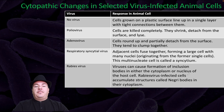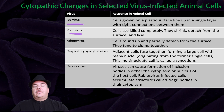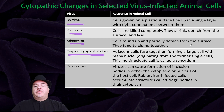Here are examples of cytopathic changes in selected virus-infected animal cells. Without virus, animal cells grow in a single layer with tight connections. Poliovirus infection kills cells completely — they shrink, detach, and lyse. A dental virus causes cells to round up, partially detach, and clump together. Respiratory syncytial virus causes adjacent cells to fuse into a large multinucleate cell called a syncytium. Rabies virus causes formation of inclusion bodies called Negri bodies in the cytoplasm of host cells.